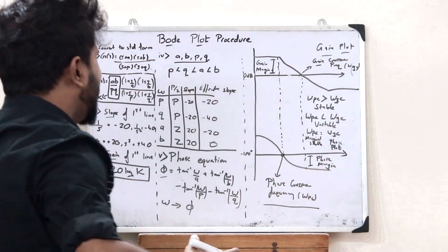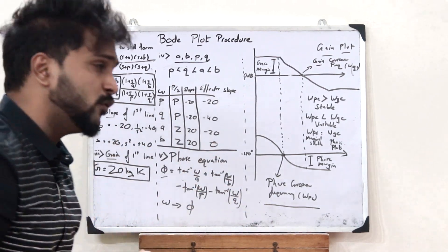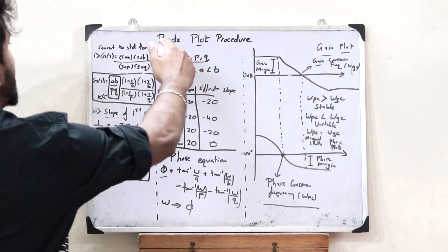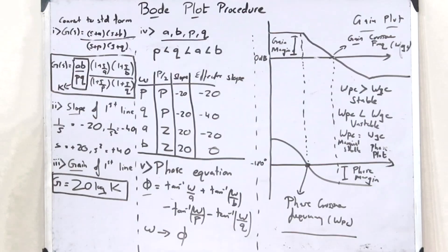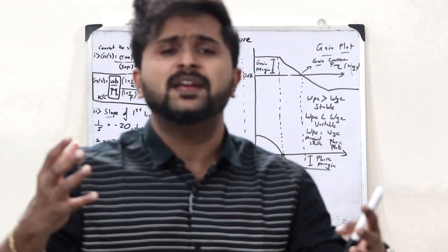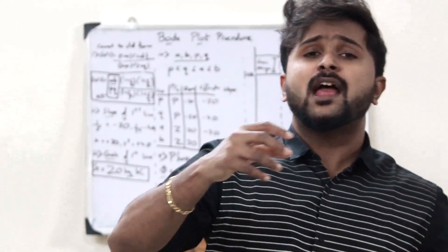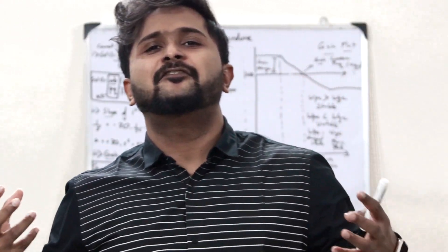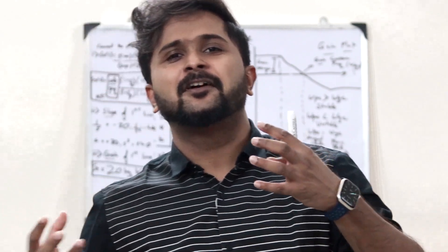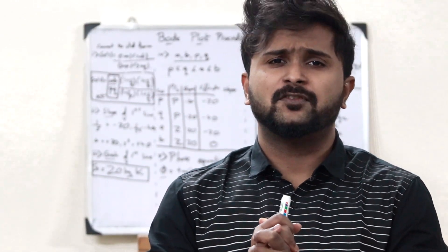This is the basic idea behind what we refer to as a Bode plot — these are the basic steps behind how you plot a Bode plot and ultimately find whether a particular control system is stable or unstable.